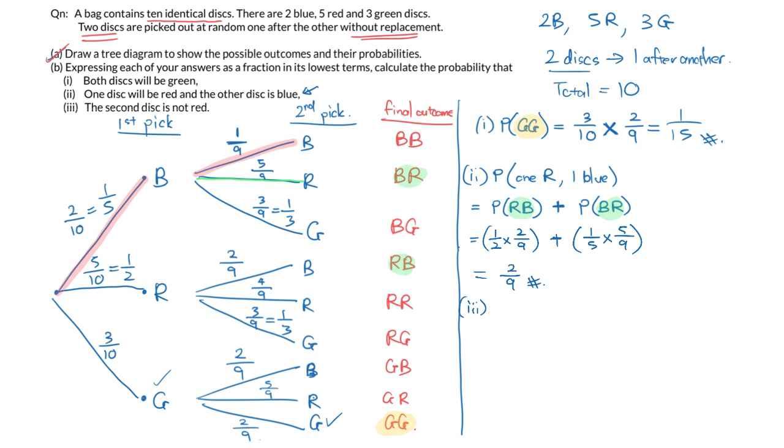The third one, part 3, the second disc is not red. So they want the condition of the second disc not to be red. Now, if you look carefully across all the final outcomes in this column here, notice that many of them satisfy that statement. But what if I wanted to take a shortcut? What if I wanted to take the total probability of 1 and subtract it away from all of them that has the second disc as red?